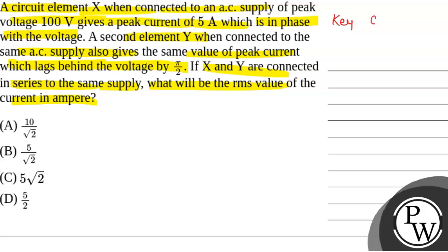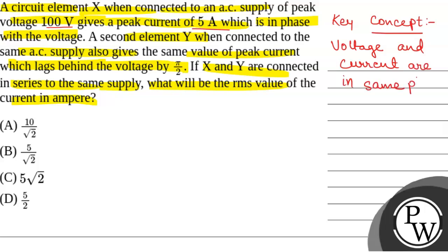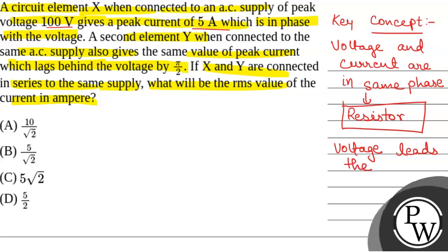First of all, we will see what will be the key concept used in this question. When voltage and current are in the same phase, then the circuit element is resistive. And if the current lags the voltage by a phase of pi by 2, then the circuit element is an inductor, and the circuit is inductive.